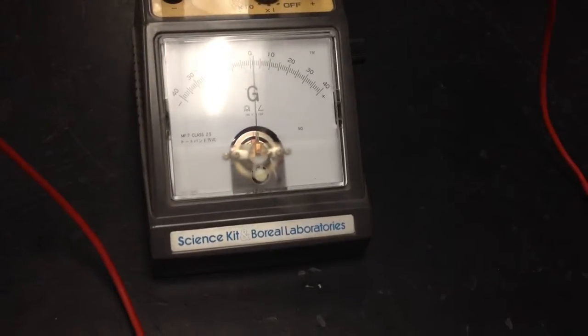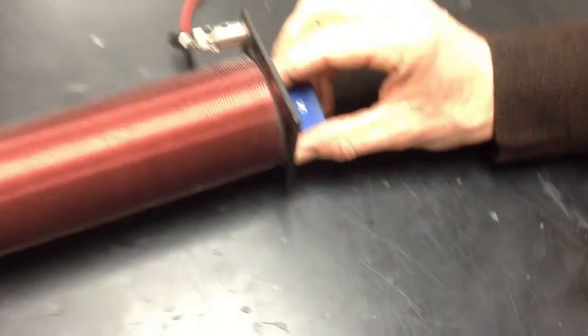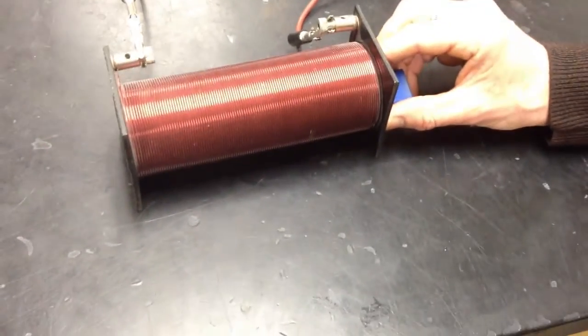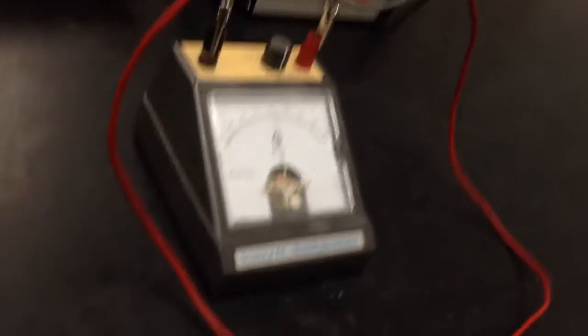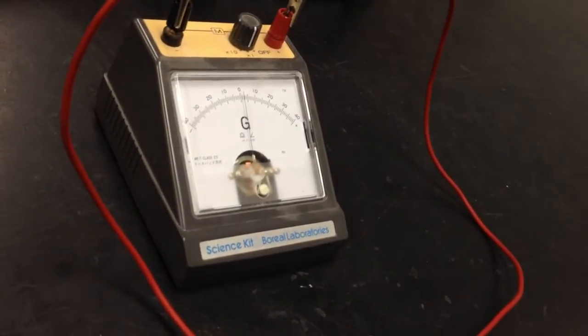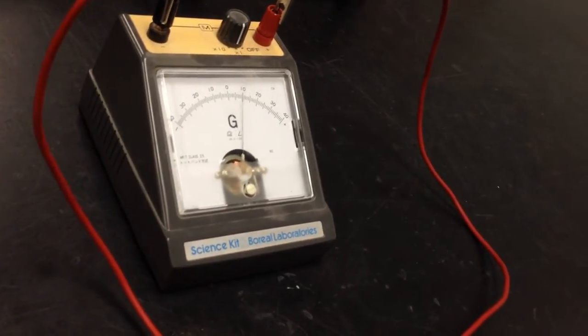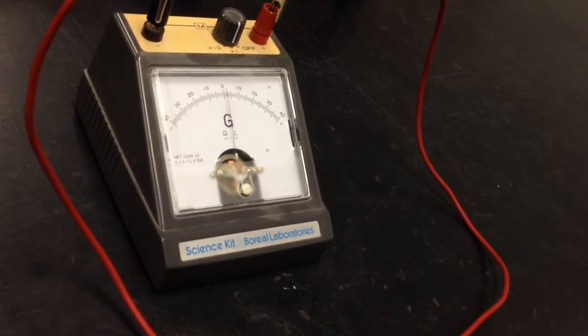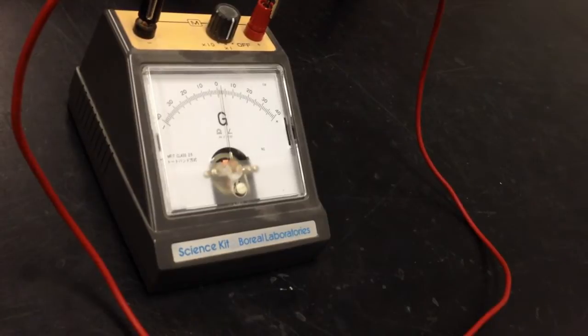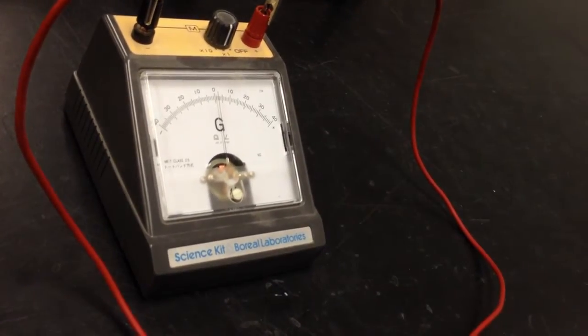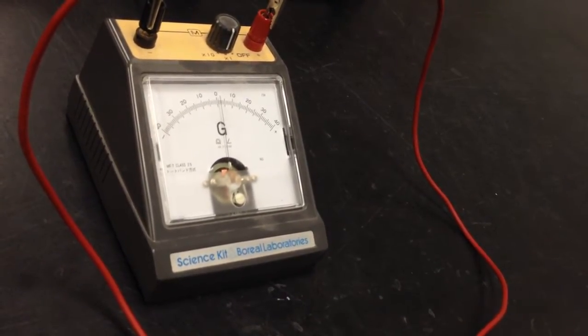Right now I'm inserting the north, and you see the needle deflect. But now the magnet is just sitting there. The needle stays at zero. When I remove the magnet, the needle deflects the other way. I don't know if you saw that, so I'm going to try it again.